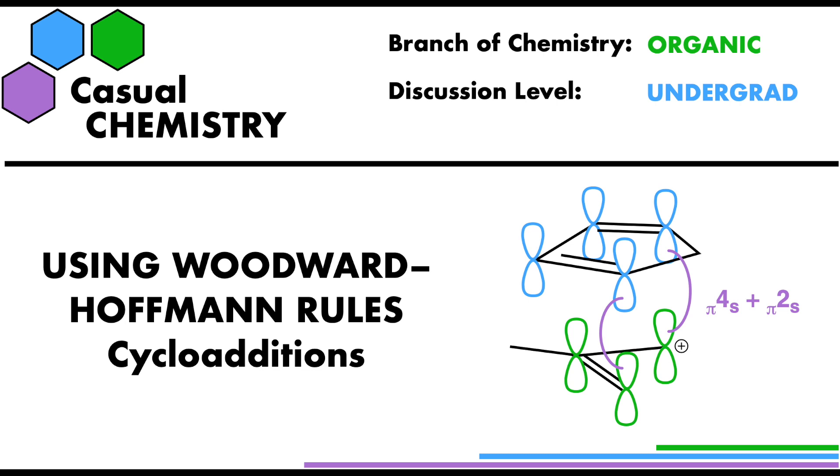Hi everyone, I thought today I'd try something a bit different and have a discussion about how you use the Woodward-Hoffman rules to justify whether a cycloaddition reaction, a type of pericyclic reaction, is allowed or not under some given conditions.